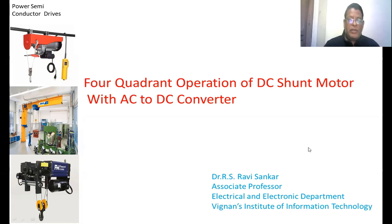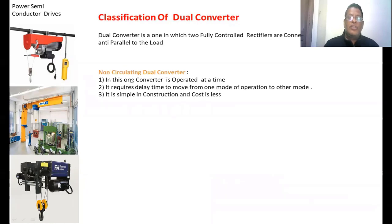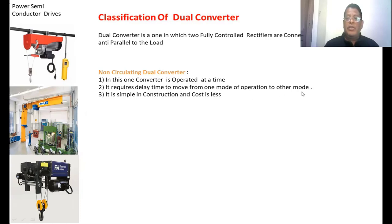We are going to see what a dual converter is and what types exist. A dual converter has two fully controlled rectifiers connected anti-parallel to the load. There are two types: the non-circulating dual converter, where only one converter operates at a time for any quadrant — forward motoring, braking, reverse motoring, or reverse braking. It requires a delay time to move from one mode to another, for example from forward motoring to reverse motoring. It is simple in construction and cost-effective.